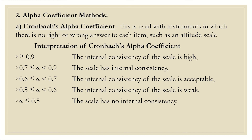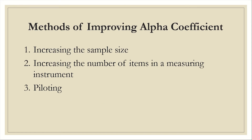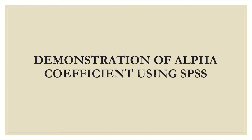Just like we mentioned when discussing reliability generally, the Cronbach alpha coefficient that is acceptable is the value above 0.7. How do we improve the alpha coefficient value? We can improve the value by increasing the sample size, by increasing the number of items in a measuring instrument, and also by piloting. Please note that piloting does not determine reliability — it only improves reliability. It does not determine reliability, neither does it determine validity. We will now demonstrate how to test alpha coefficient reliability using SPSS.